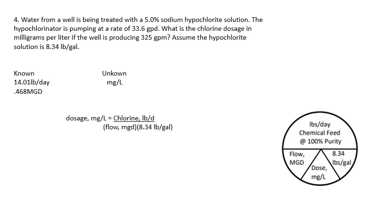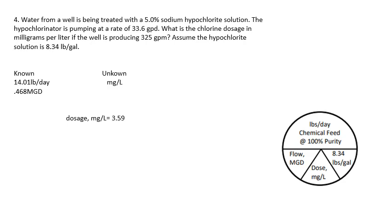That becomes our known. Now we know the pounds per day and the million gallons per day, so we can solve for dosage in milligrams per liter using the Davidson pie chart: 14.01 pounds per day divided by 0.468 MGD times 8.34 pounds per gallon equals 14.01 divided by 3.90. Your answer is 3.59 milligrams per liter.